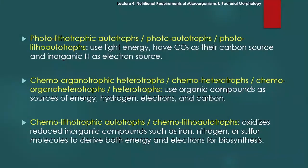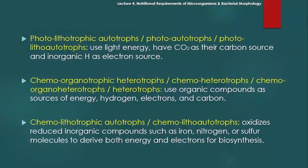ان ہی types کو combine کر کے مختلف terminology بنتی ہے۔ For example، photolithotropic autotrophs — یا simply photolithotrophs — photo یعنی light energy کو energy source use کرتے ہیں، carbon dioxide کو بطور carbon source use کرتے ہیں، اور inorganic hydrogen کو as electron source use کرتے ہیں۔ ایسے microorganisms کو ہم photolithotrophs بولتے ہیں۔